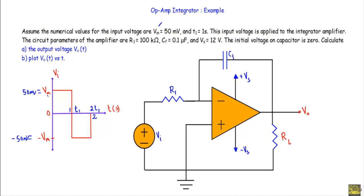This input rectangular waveform is applied at the integrator amplifier — specifically at the inverting terminal of the operational amplifier through bias resistor R1. The output terminal is connected back to the inverting terminal, so this circuit will be in negative feedback. The circuit parameters are: R1 equal to 100 kilo-ohm, feedback capacitor Cf equal to 0.1 micro-farad, and the bias voltage Vs equal to plus 12 volt and minus Vs equal to minus 12 volt.